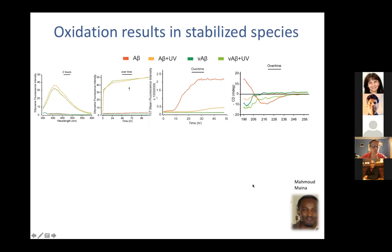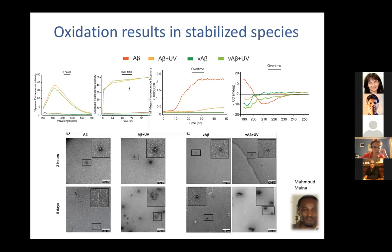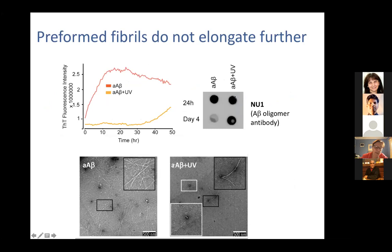It also seems to halt any formation of beta sheets. Essentially, what we think is that oxidation at the level we're using is inducing dityrosine formation, which cross-links and halts the species in the sample. This produces bundles of amorphous aggregates — oligomeric species of about the right size — and they show the expected intensity on a dot blot using the Abeta oligomer-specific antibody NuONE. These preformed fibrils will not elongate any further. Whatever point at which we expose Abeta to UV light, cross-links form, freezing those species at that point.